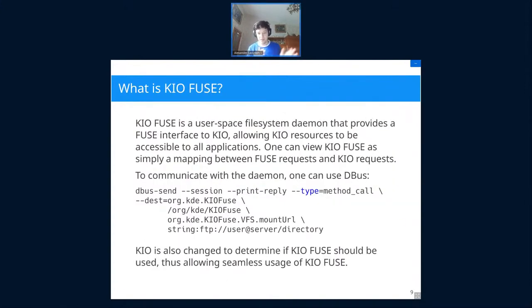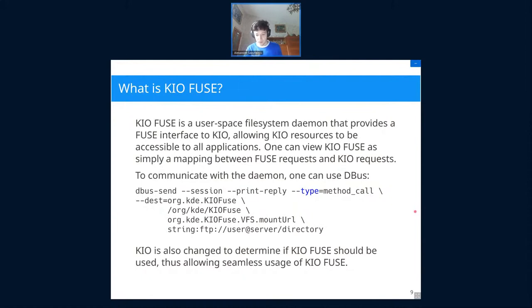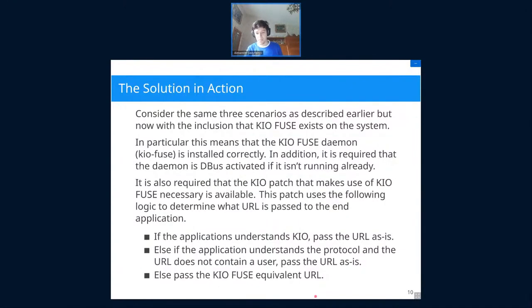KIO Fuse itself is that server application, and it makes KIO resources accessible to all applications. Essentially, KIO Fuse is a mapping between FUSE requests and KIO requests — for example, an open followed by some reads and a close is equivalent to a KIO get request. KIO manages that mapping as seamlessly as possible. To mount a resource you can use a DBus request, or use it directly from a terminal in bash. KIO also makes some additional changes to support seamless use of KIO Fuse.